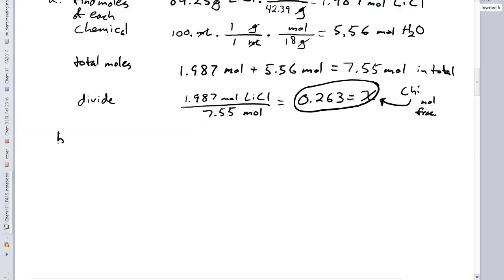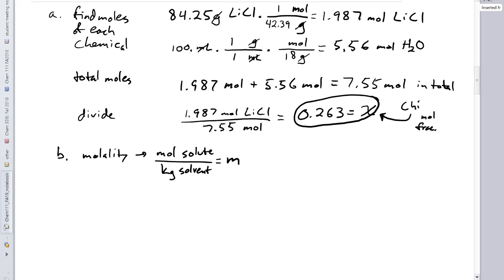B for molality, moles of solute over kilograms of solvent equals molal. Do we have these? We actually do have moles of solute. That's nice. So we have moles of solute from before. And that's 1.987 moles of lithium chloride. I need kilograms of solvent. So in this case I started out with 100 milliliters of water. This too looks kind of like a unit conversion. I started with 100 milliliters of water. I need to get to kilograms. So I will get myself to grams first. I'll just say it's one, pretty close.